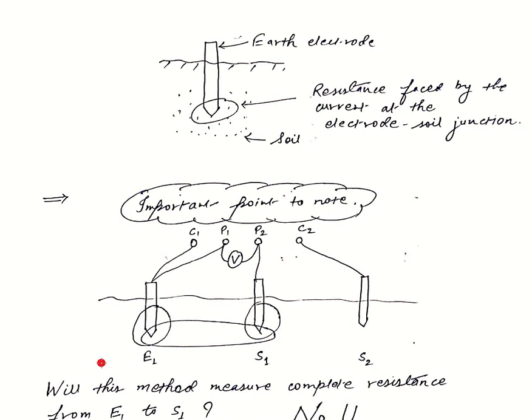The answer is no. As we can see here, there are three regions in total: this region, this complete region, and this region. We want resistance of this region only as earth resistance, because this is our main earth electrode and these are just spikes which we have connected for measurement purpose.